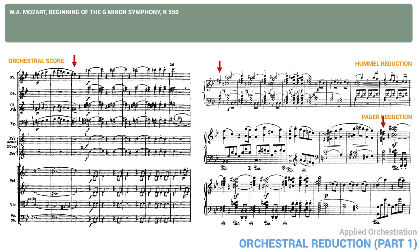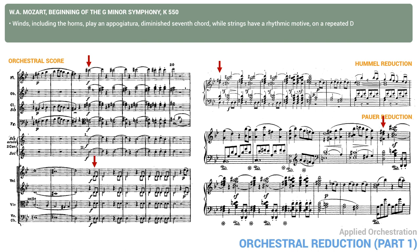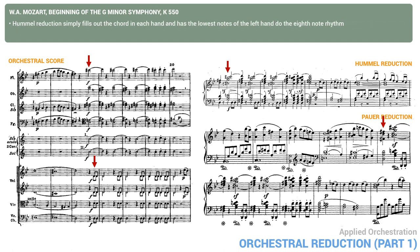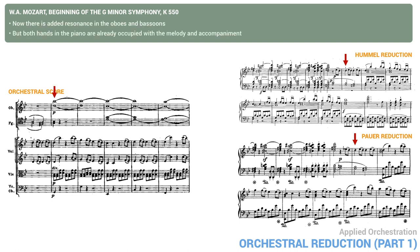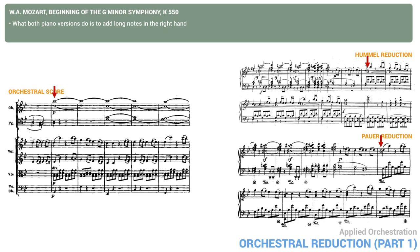The following bars, measures 16 to 21, are the first tutti in the piece. The winds, including the horns, play a fortissimo diminished seventh chord, while the strings have a rhythmic motive on a repeated D. By definition, a piano reduction can't do two different timbres at the same time, so register and rhythm will have to serve to differentiate the two planes of tone. The Hummel reduction simply fills out the chord in each hand and has the lowest notes in the left hand do the eighth-note rhythm. The Power version puts the eighth notes in octaves — it's a bit harder to play, but a bit more convincing for a tutti passage. Note that the Hummel version leaves out the eighth notes in measure 19. When the opening comes back in measure 21-22, there is added resonance in the oboes and bassoons, but both hands are already occupied with the melody and accompaniment. So what both piano versions do is add long notes to the right hand, filling out the missing chords, only adding two notes on the first beat where the harmony changes.